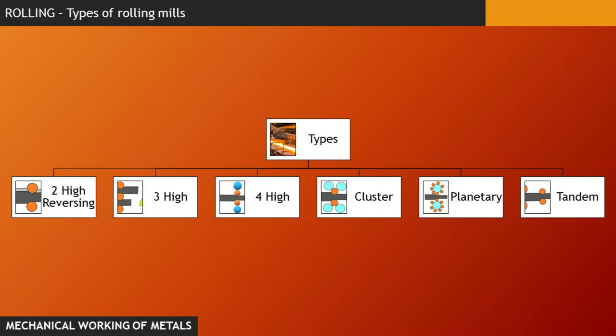First being a two-high rolling mill, a three-high mill, a four-high mill, then we have a cluster rolling mill, a planetary rolling mill, and last but not least, a tandem rolling mill.